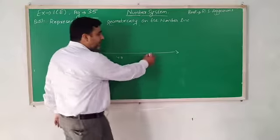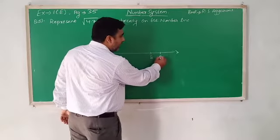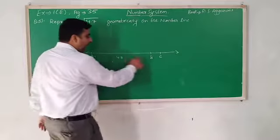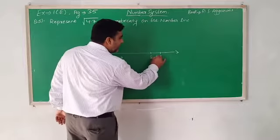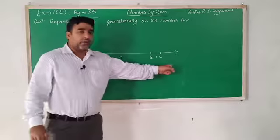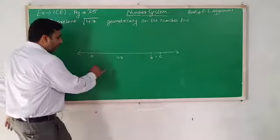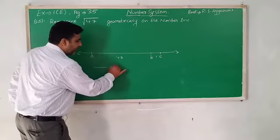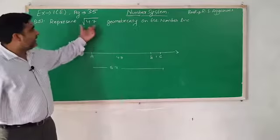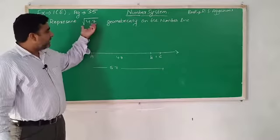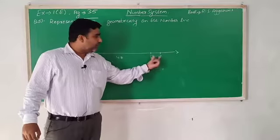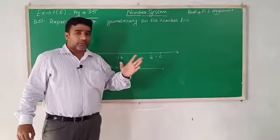Now place your scale at B and mark 1 cm further ahead — this will be point C. So AB = 4.7, BC = 1, and therefore AC = 5.7. Whatever length is given, add 1 cm to it. 4.7 is given, so first make 4.7, then add 1 cm ahead. Is that clear?